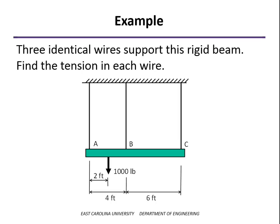So here's our example problem. We've got three identical wires, so wires are all made out of the same material, have the same length, same cross-sectional area, and they're supporting a rigid beam subjected to this thousand-pound force. Now, we know if we only had two cables here, then we would have a statically determinate problem, and we could solve for the tensions in the cable using just equilibrium. But once we added the third cable, it becomes statically indeterminate.